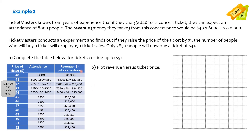Now we're going to plot revenue versus ticket price. Ticket price goes on the x-axis as the independent variable, and revenue goes on the vertical axis as the dependent variable, because the revenue depends on the ticket price. The amount of money Ticketmaster can make depends totally on how much they're charging for tickets.